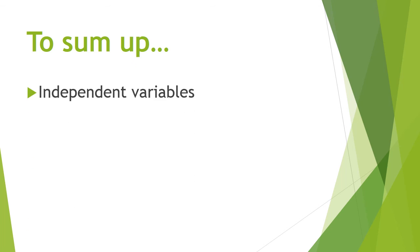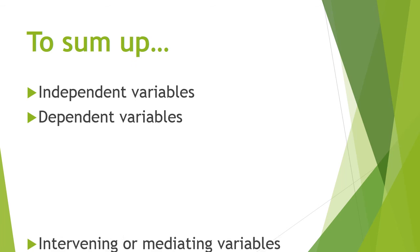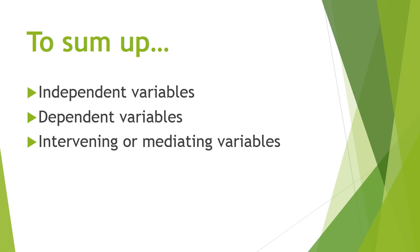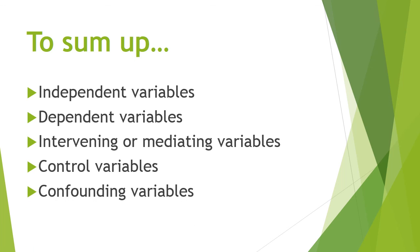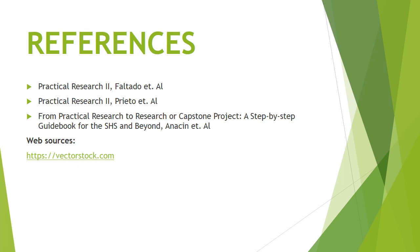To sum up, here are the kinds of variables: independent variables, dependent variables, intervening or mediating variables, control variables, and confounding variables. That's it for today's video. Check your Google Classroom and batch GCs for activity updates. See you on our next lesson.